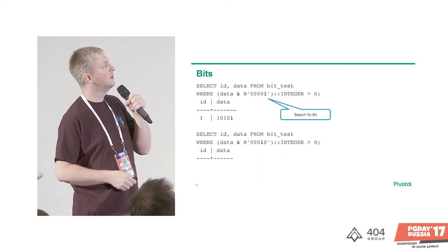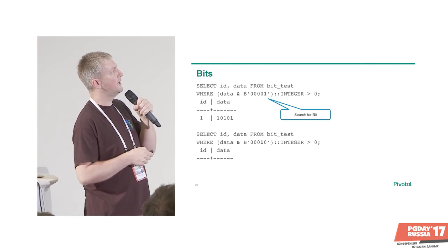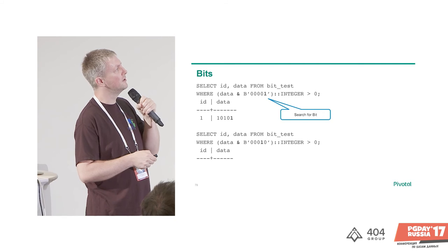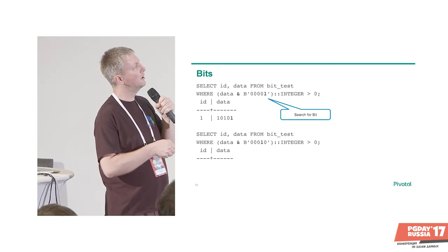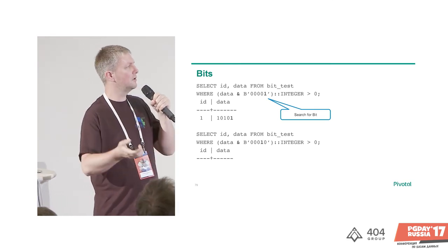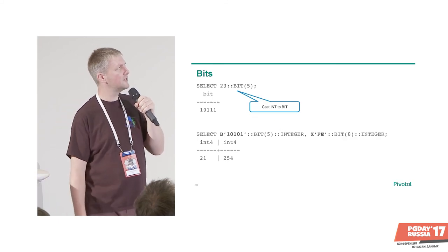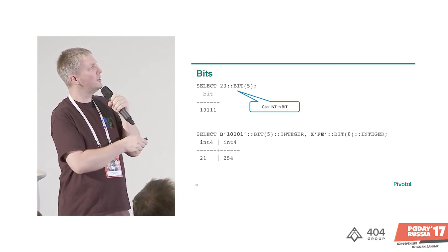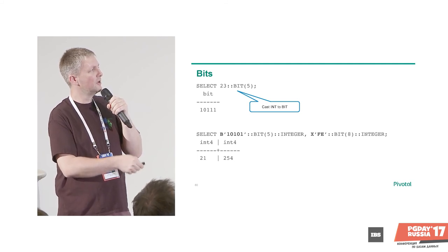You can also search in bit columns using logical AND, though you need to cast the result to an integer for a true/false comparison. For example, finding rows where the first bit is set returns the matching row; checking for a bit that isn't set in any row returns no result. Postgres can also cast between types — cast an integer to a bit type and you get the binary representation. This works with hex values too.